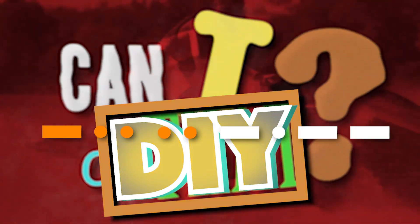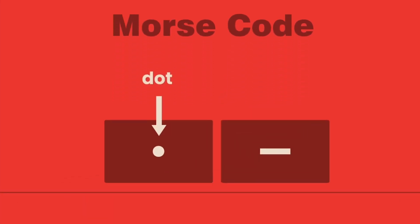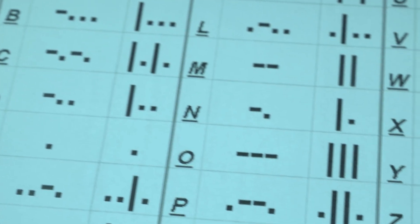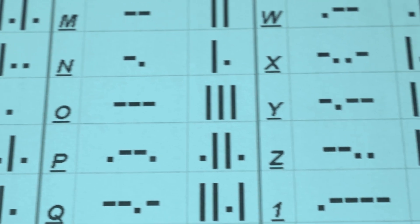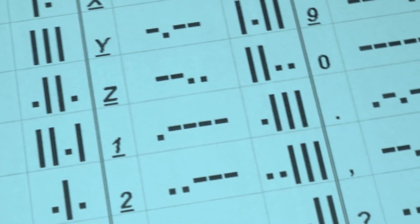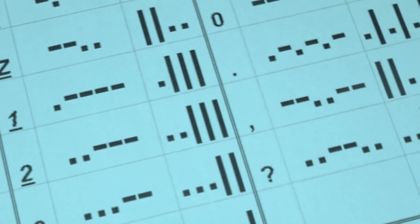It's hard to think of a simpler language than Morse code. There are only two letters in the whole alphabet: dot and dash. And the 26 letters that we're all familiar with — A, B, C, and so on —